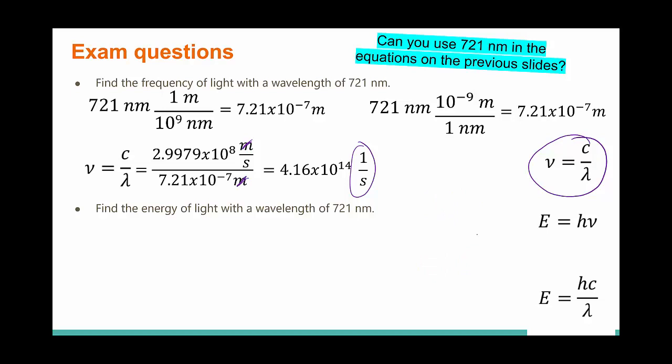So now we want to find the energy of the same light. So we're finding the energy from the wavelength. So we're going to use this equation. This equation also requires us to convert into meters. Because again, it has the speed of light, which is meters per second. So we need to cancel that meters. However, we already did this, so I'm just going to use our values from above.